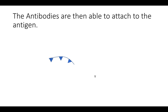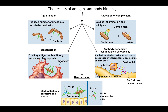The antibodies are then capable of attaching to the antigen. The results of antigen-antibody binding can result in one of five different things.